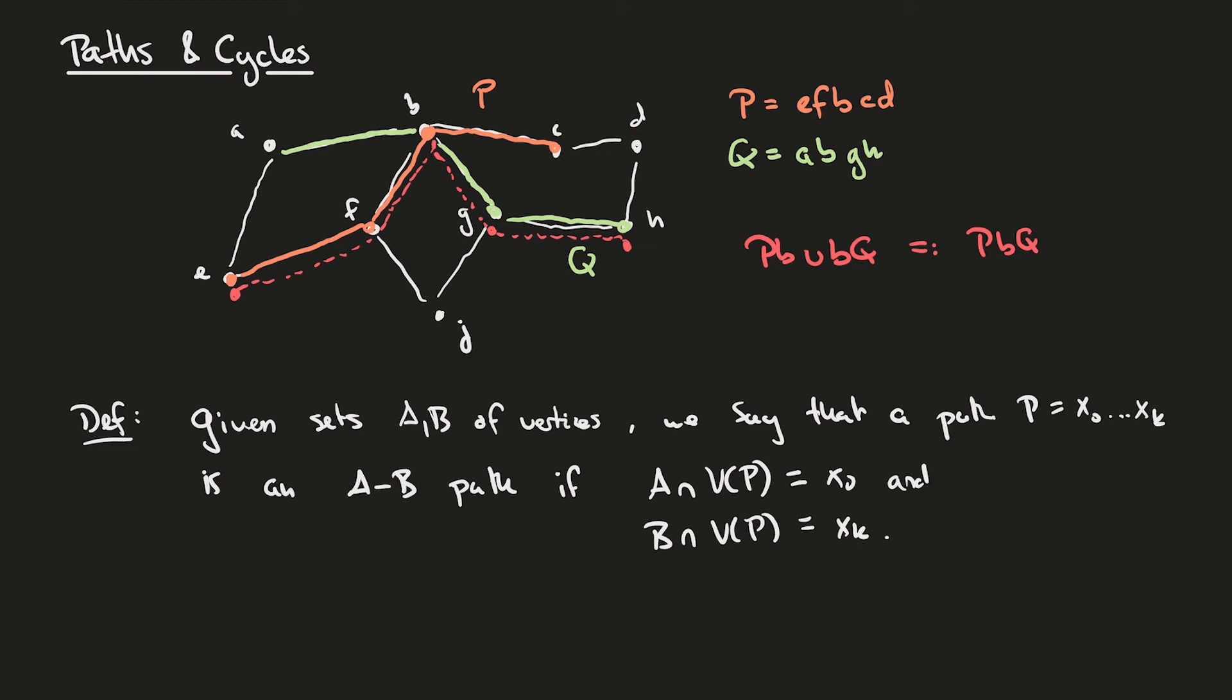In other words, a path is an AB path if one of its ends is in A, and no other vertex is in A, and the other end is in B, and no other vertex is in B. Schematically, if we have sets A and B, an AB path would have one vertex in A, and then does something in between A and B, and then finally has its other end vertex in B.